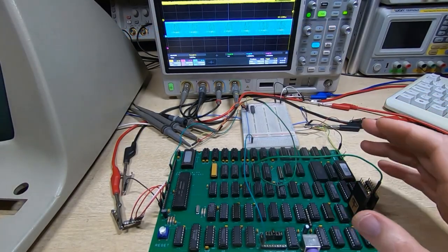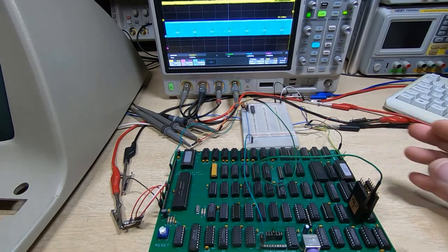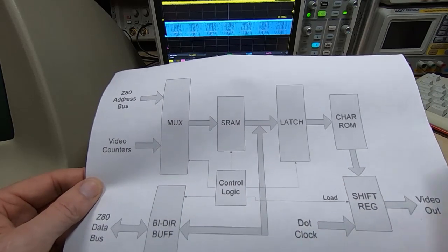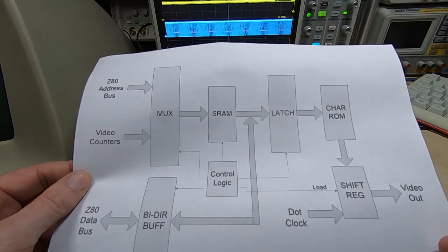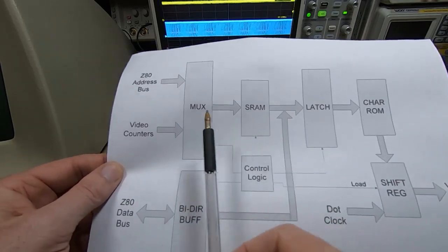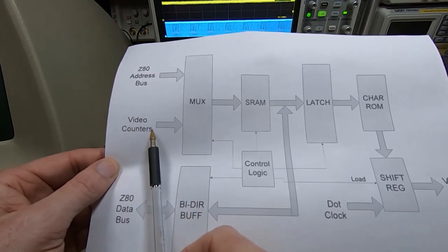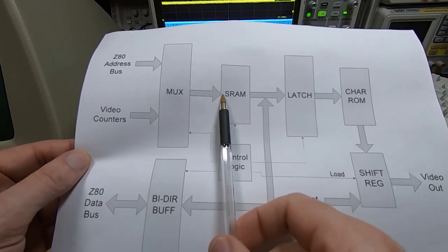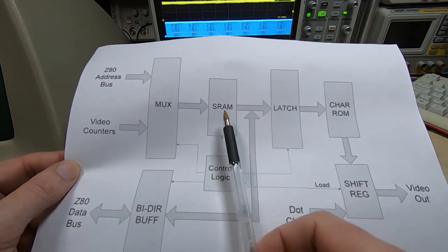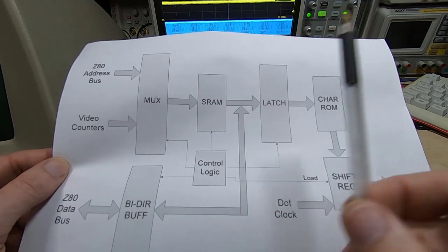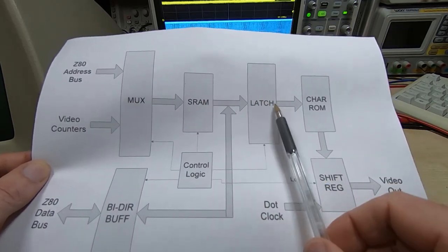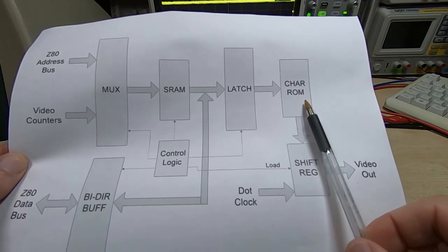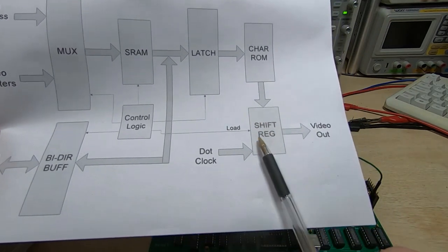I'll begin by explaining what's actually causing this. I've prepared a simplified block diagram of the video system. The way this video system works is we have a series of video counters that are used to determine where on the screen we should currently be plotting the next pixel. That's used to feed an address to our video RAM that selects the particular RAM address - the character we want to display at a particular location on the screen. That data is latched and fed through to a character ROM.